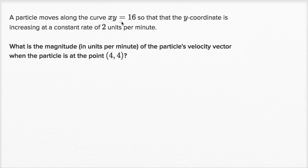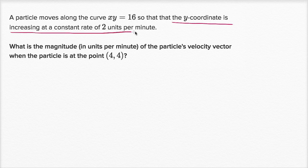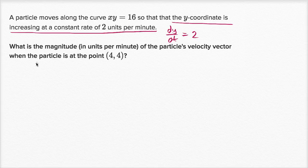A particle moves along the curve xy equals 16, so that the y coordinate is increasing at a constant rate of two units per minute. That means the rate of change of y with respect to t is equal to two. What is the magnitude in units per minute of the particle's velocity vector when the particle is at the point four comma four?